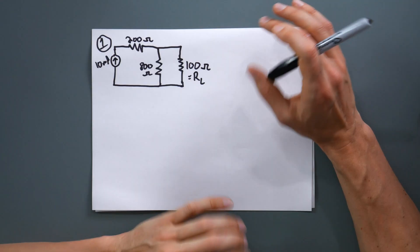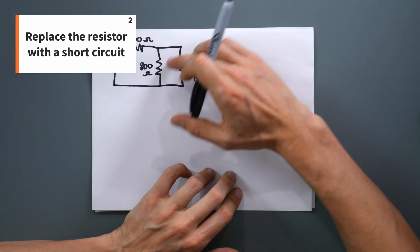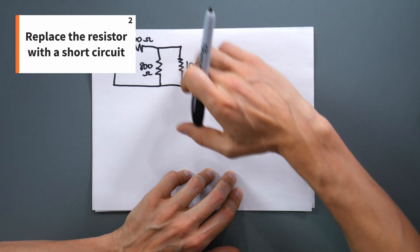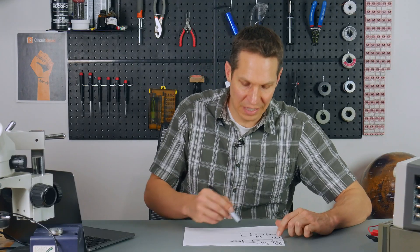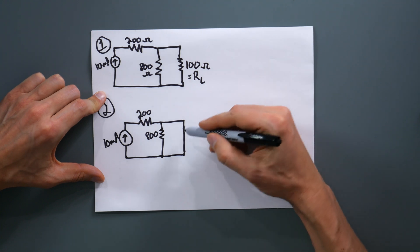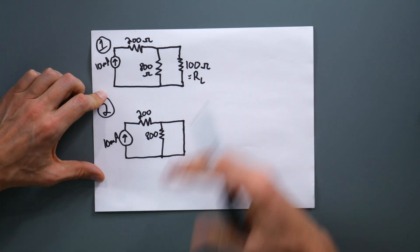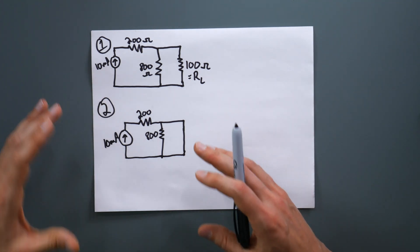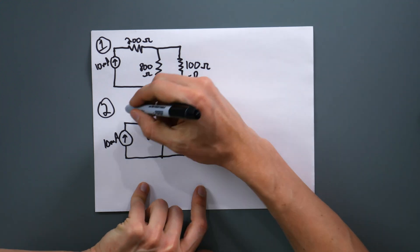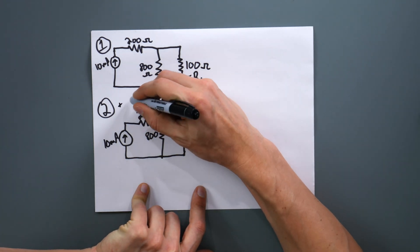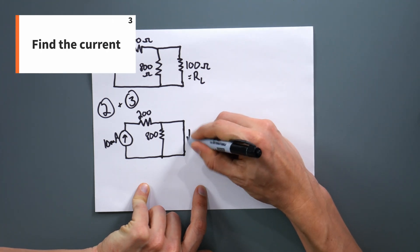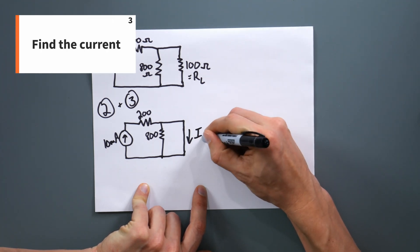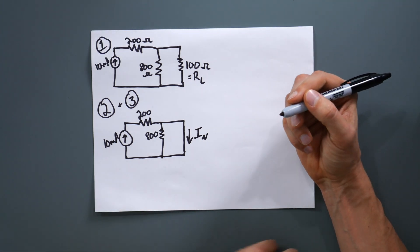Step two: we will actually remove this load and put a short circuit there. We have simply taken this load resistance and replaced it with a short circuit. Now if you want, you could redraw this for step three for the analysis. But we will go to step three and calculate the current through this short circuit, which will give us our Norton equivalent current.